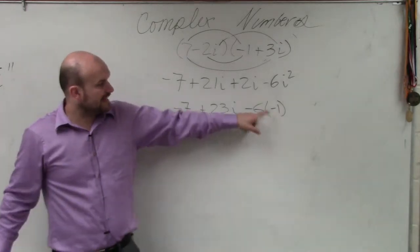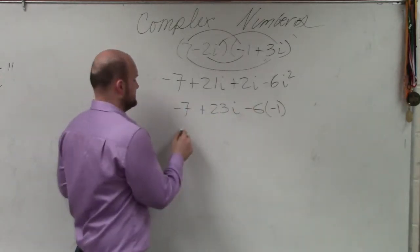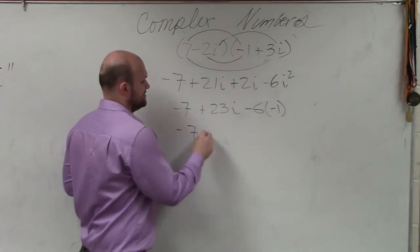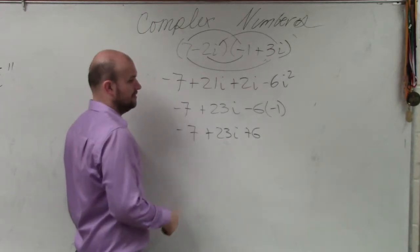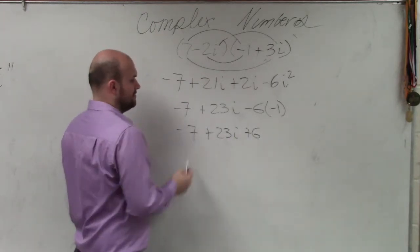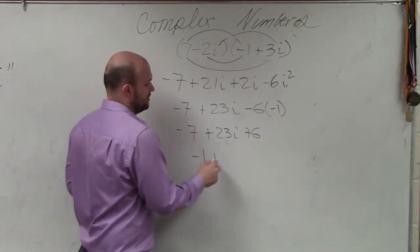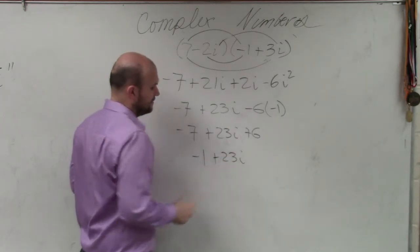So now, negative 1 times negative 6 is positive 6. So I have negative 7 plus 23i plus 6. Well, now I can combine my real numbers to give me negative 1 plus 23i.